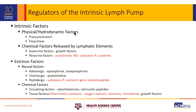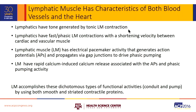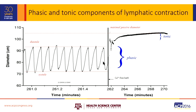The regulators of lymphatic pumping include intrinsic physical factors: pressure and stretch influence activity, shear mechanisms acting through nitric oxide and similar pathways alter it, and chemical factors are released by lymphatic cells. Extrinsic factors also play a role: these vessels are innervated with adrenergic, cholinergic, and particularly peptidergic innervation that alters function, as well as circulating chemical factors. The unique characteristic of lymphatic muscle is that it has properties of both cardiac muscle and smooth muscle — a unique mixture of striated and smooth muscle components with pacemaker activity and calcium-dependent release, producing both tonic constriction and fast phasic pumping activity.